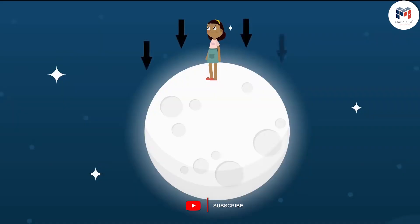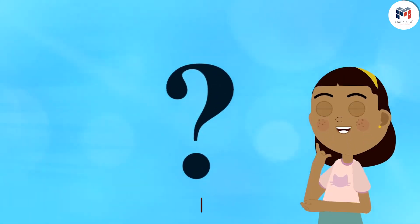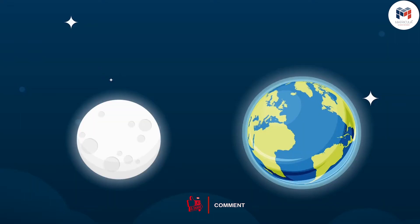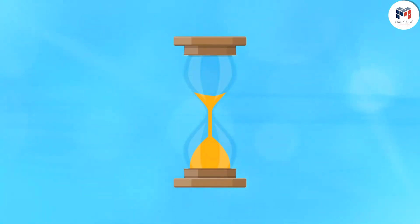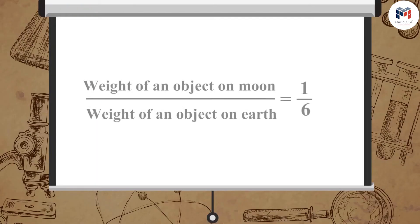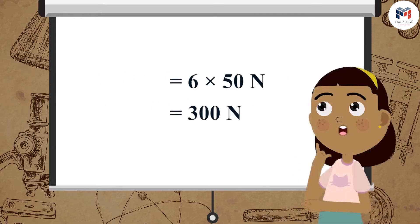What will be your weight on the moon? Now, let us solve a problem together. The weight of an object on the moon is 50 Newton. How much will the object weigh on the earth? Since the weight of an object on the moon upon weight on earth equals 1/6, the weight on earth equals 6 multiplied by its weight on the moon, which is 6 multiplied by 50 Newton, equal to 300 Newton.